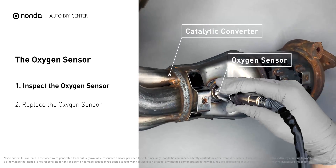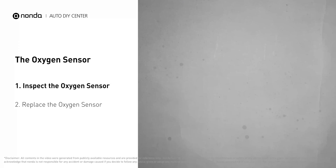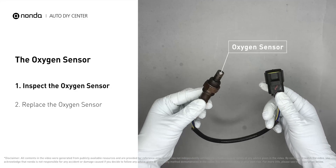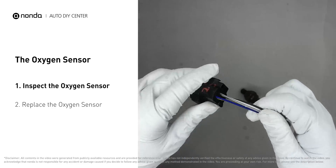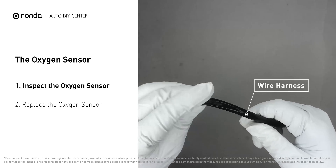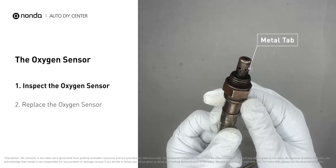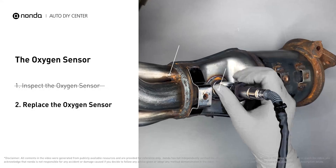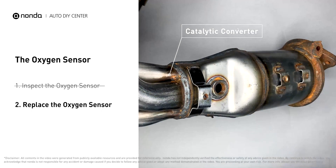Carefully remove the oxygen sensor from the catalytic converter. Visually check the oxygen sensor's electrical connections, wire harness, and metal tabs for any damages. If damages are found, then replace the oxygen sensor.